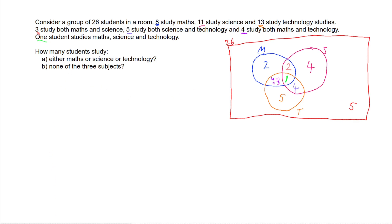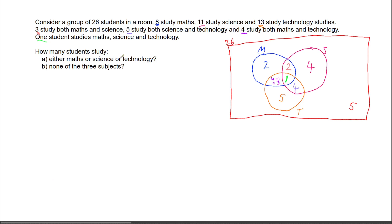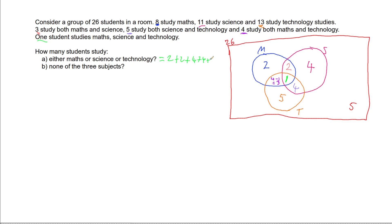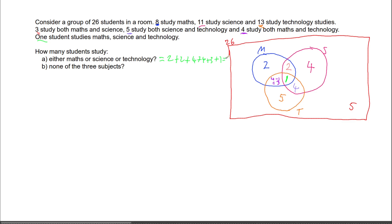Now we can answer the questions. How many study maths or science or technology? That's the sum of everything within the circles: two plus two plus four plus four plus three plus one plus five, which comes to 21. And how many study none of the subjects? We already worked that out to be five — that's the number outside the circles. That's how you solve this using a Venn diagram: draw it and add up the required parts.